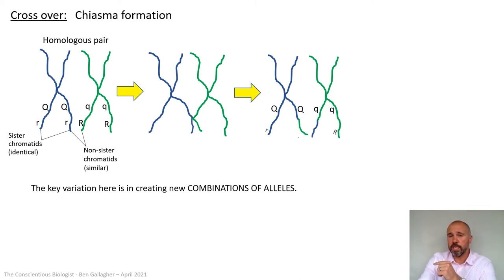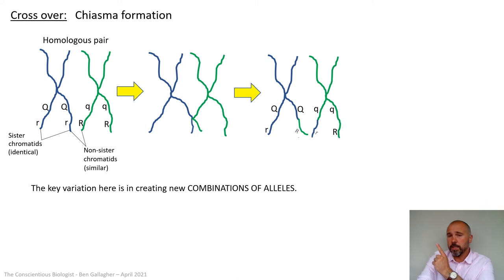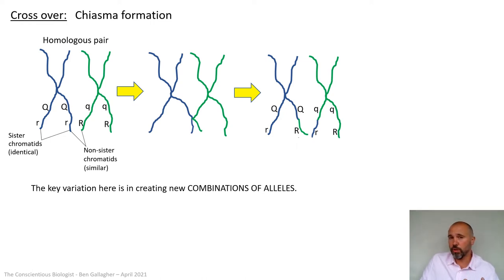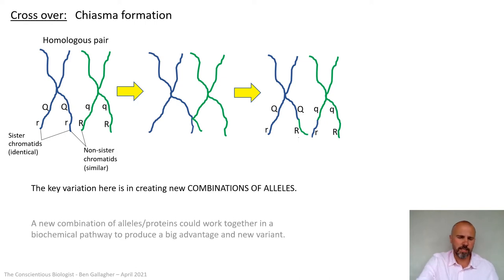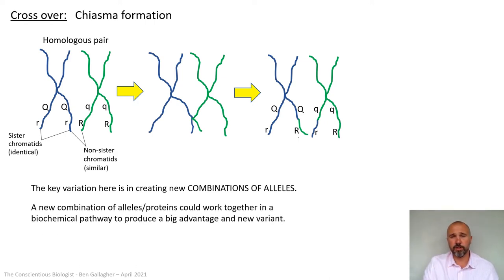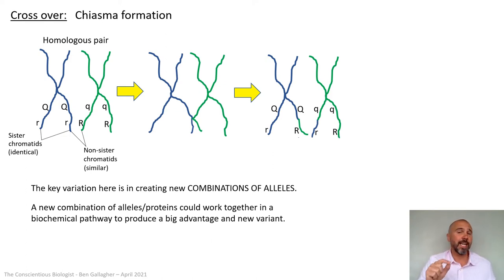After crossover, the Q's remain the same because they haven't crossed. On the outer chromatids - the ones that didn't cross - you still have dominant Q with recessive R, and recessive Q with dominant R. But in the middle chromatids, because they've switched, you've recombined: you now have two dominant alleles together, and two recessive alleles together - combinations that didn't exist before. This is a new combination of alleles, meaning new combinations of proteins, because alleles are genes that code for proteins with functions. If two dominant proteins work together in a biochemical pathway, they could produce a big advantage in a new variant.